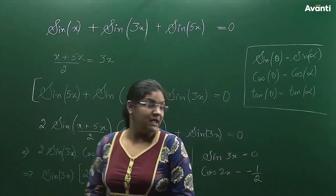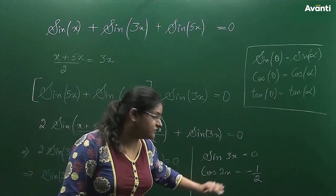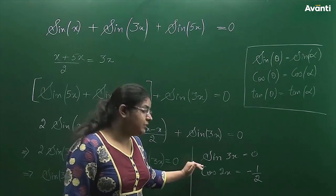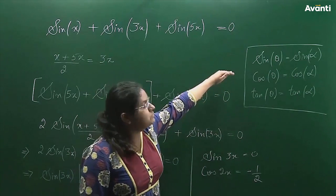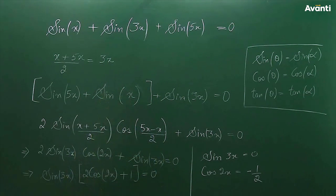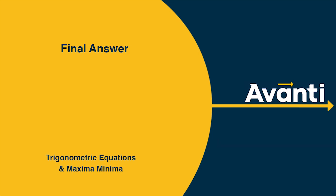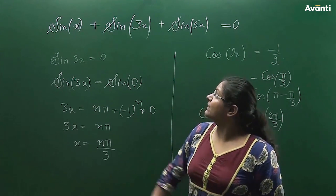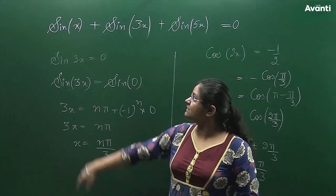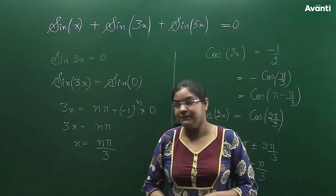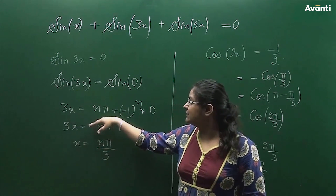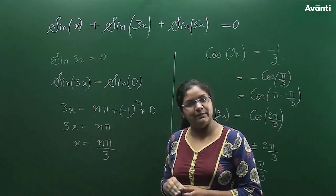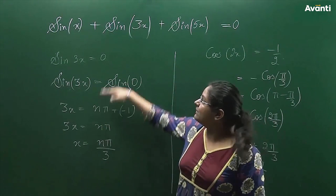For the whole expression to equal zero, we get two separate equations. Why don't you pause the video here, try converting these expressions into their standard forms, and find the values of x. I hope you have solved these two equations — let's quickly check your answers.